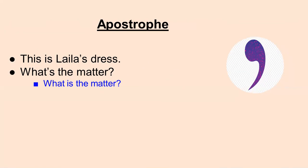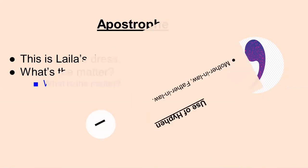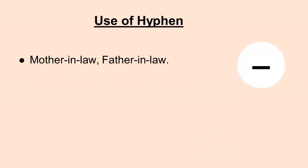Now come to the use of the hyphen. There are compound words like 'mother-in-law' and 'father-in-law.' We use a hyphen to connect different parts of compound words, such as mother-in-law, father-in-law, sister-in-law, brother-in-law, and so on.